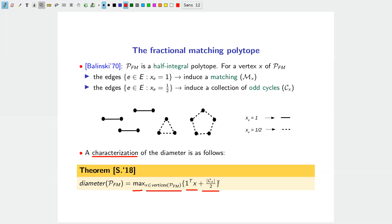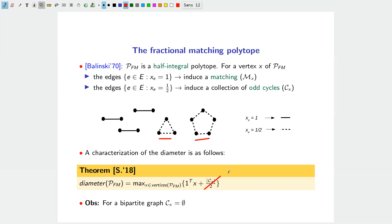Intuitively, similar to before, you are maximizing the size of the fractional matching, but now the diameter can also be enlarged by having many odd cycles in the support. As a sanity check: for bipartite graphs, there are no odd cycles, so the extra term disappears and we recover the same value as for the matching polytope. This is expected because for bipartite graphs the odd-set inequalities are redundant and the two polytopes coincide.